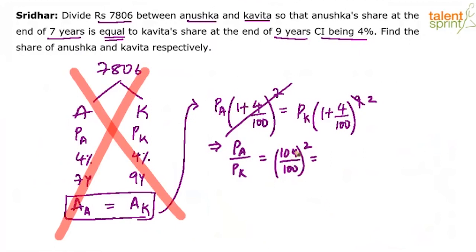(104/100)² is (26/25)². So 26 squared is 676 and 25 squared is 625. Therefore the principals must be divided in the ratio 676 : 625.